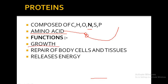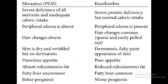Proteins help in the growth and repair of body cells and tissues, and sometimes proteins also release energy. There are two types of disorders caused due to deficiency of different nutrients: kwashiorkor and marasmus.